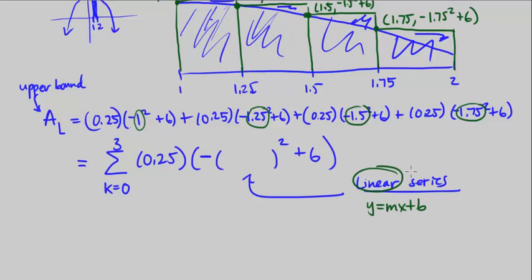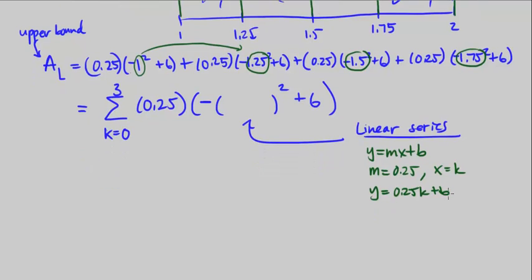x we know is k, because we're using k as the variable. So that changes this to be y is equal to 0.25k plus b. So we want to solve for b.